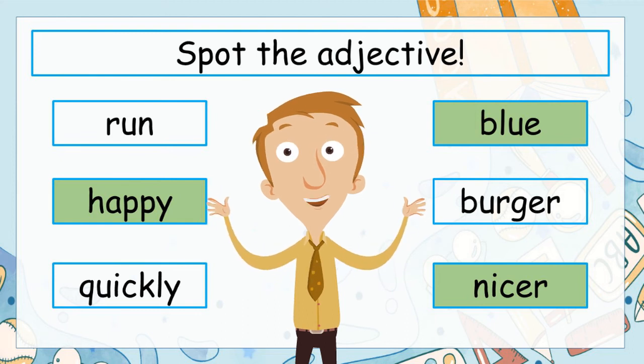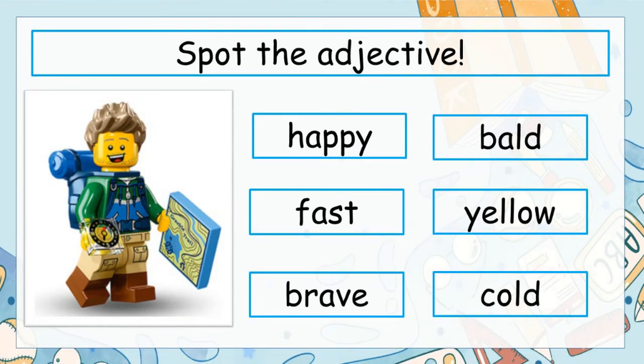Let's try another practice activity. Have a look at this little hiker minifigure. Look at all the little details — his face, what he's wearing, all the clues. Which of these six adjectives would you use to describe this minifigure? The three adjectives I would use are happy, definitely yellow, and brave — because it looks like he's going on some sort of adventure. He's definitely not bald, we don't know if he's fast, and he certainly doesn't look cold with all those layers on him.